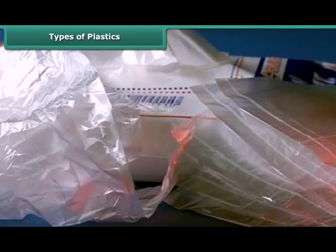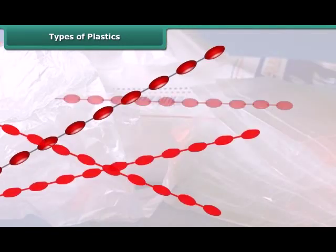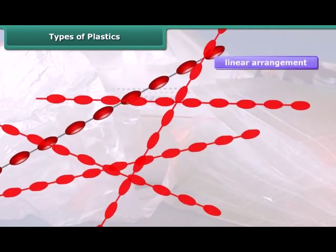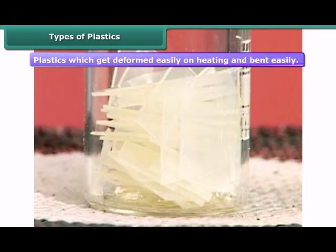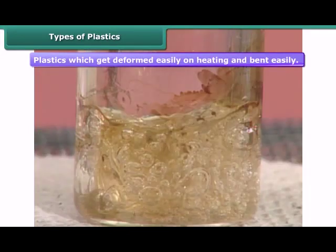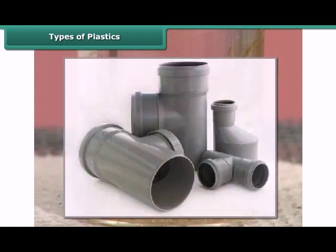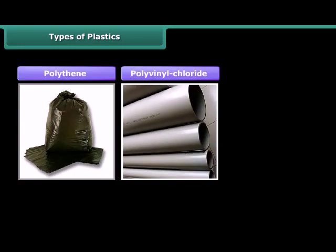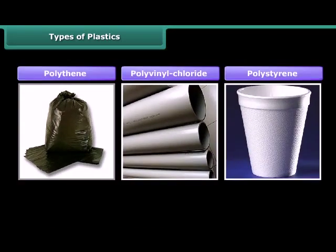The constituent units of thermoplastics have a linear arrangement. On being heated, thermoplastics become mouldable and soft. Now they can be recast in different shapes and then cooled, causing them to harden without any chemical change. Therefore, they can be recycled. Some examples of thermoplastics are polythene, polyvinyl chloride and polystyrene.